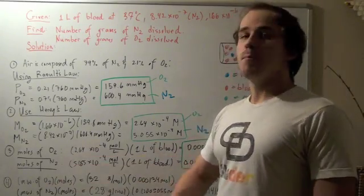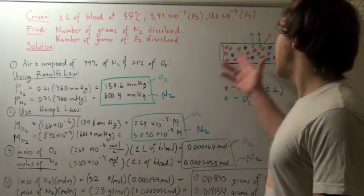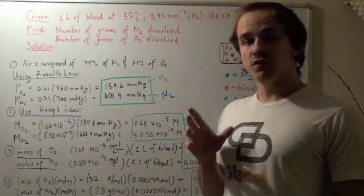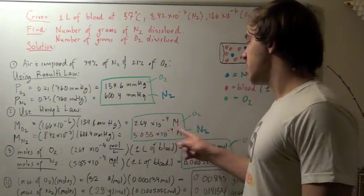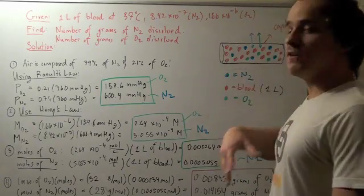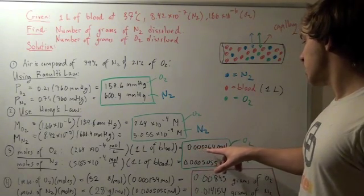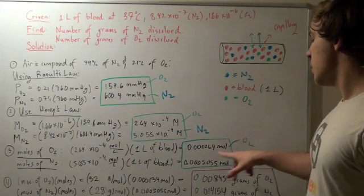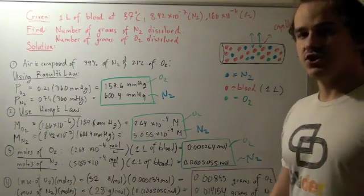The third step is to find the moles of oxygen and the moles of nitrogen dissolved within our blood. To find the moles of oxygen, we simply take our molar concentration, multiply that by one liter of total solution, and we get 0.00264 moles of O2, and 0.0005055 moles for N2.